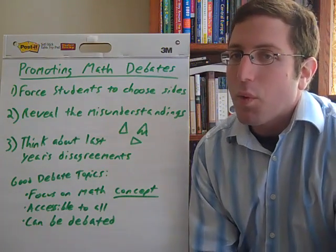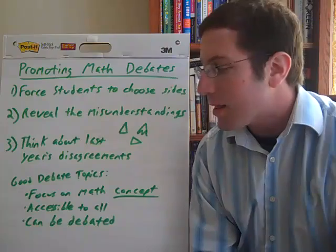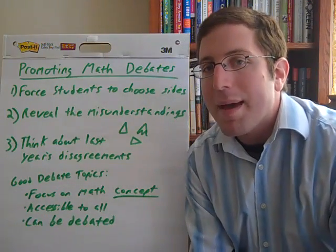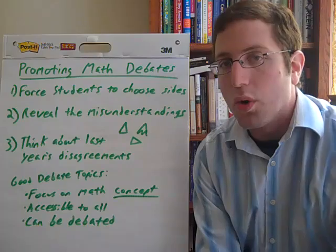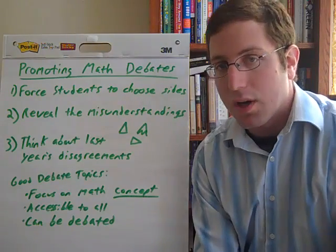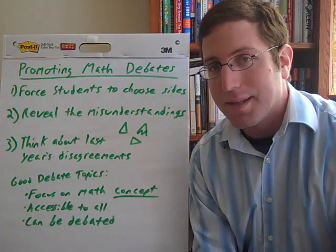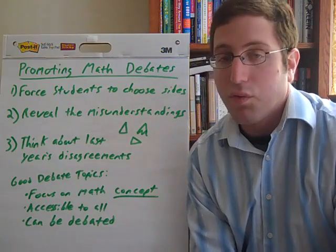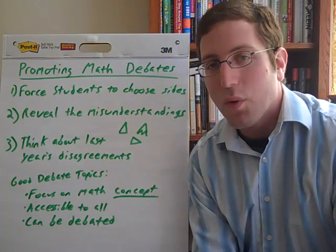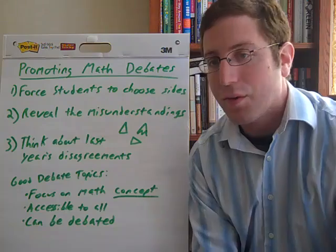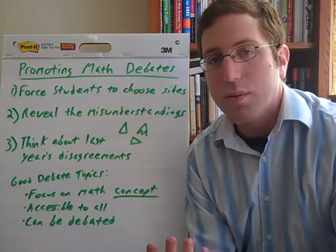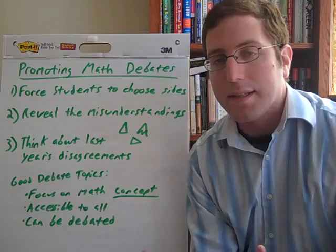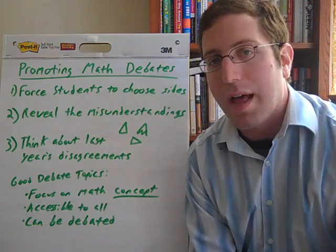The authors then go on to talk about what makes a good debate topic in math. There are three main things. The first is: make sure you're focusing on a math concept, not a rule. Something like the steps of long division do not make a good debate, because it's a rule — there's no real concept inherent in it. Whereas something like 'is 4 times 8 the same as 8 times 4,' or the triangle issue — what actually makes a triangle a triangle — there's actually a concept underlying those.